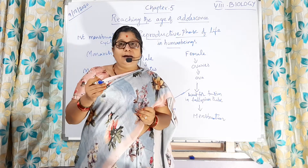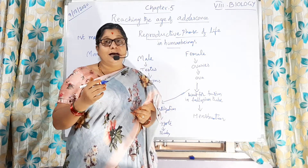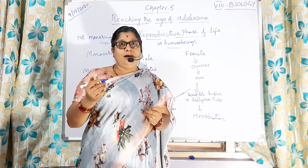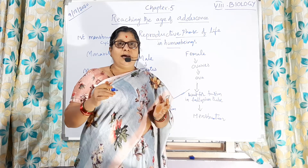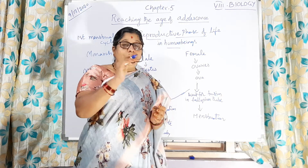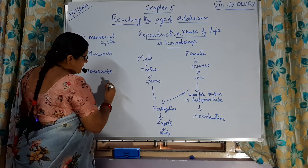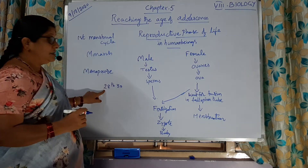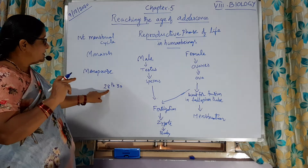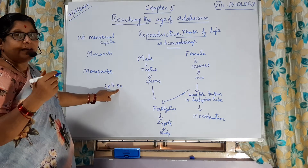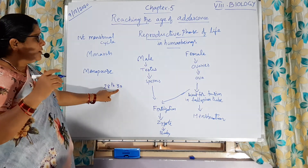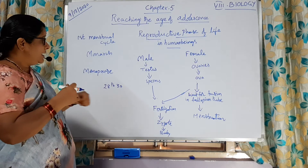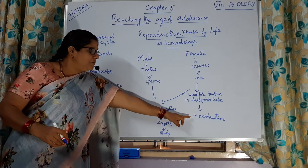Usually, in the beginning the menstrual cycle will be irregular in some girls — up to one year, that is no problem. The ovum is going to be released every 28 to 30 days. In every month on the 28th to 30th day, the ovum is going to be released. It waits for fertilization, and if fertilization does not happen, it is expelled out of the female body. That we call menstruation.